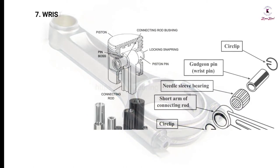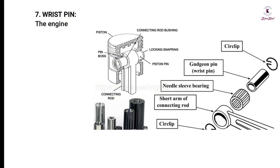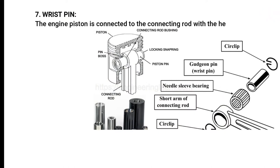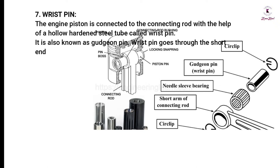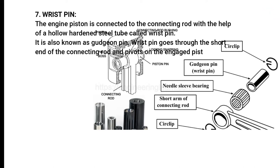Wrist pin: The engine piston is connected to the connecting rod with the help of a hollow hardened steel tube called the wrist pin, also known as the gudgeon pin. The wrist pin goes through the small end of the connecting rod and pivots on the engaged piston.